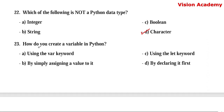Question number 23. How do you create a variable in Python? Option A: using the var keyword. Option B: by simply assigning a value to it. Option C: using the let keyword. Option D: by declaring it first. Here, option B — by simply assigning a value to it — is the right answer.